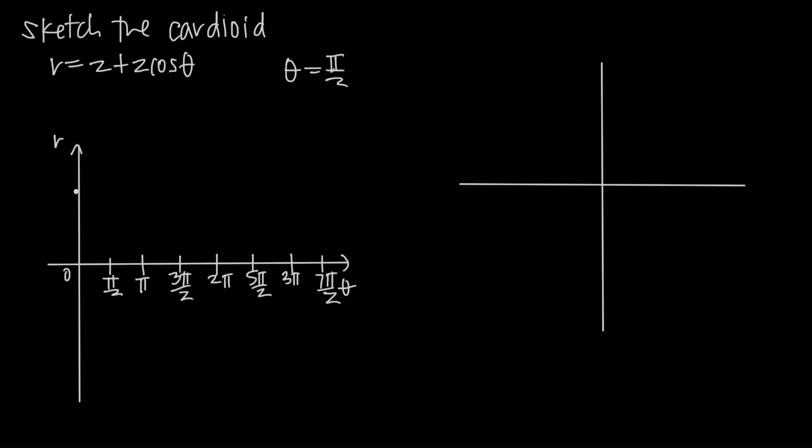So at 0 we have a value for r of 4, so we'll call this right here 4, and we'll call this about negative 4 here. So we have 0, 4. Now we want to plug in pi over 2.